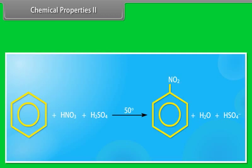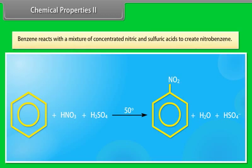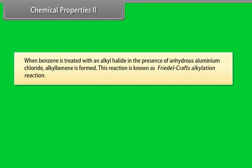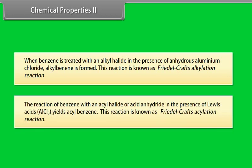In another example of an electrophilic aromatic substitution reaction, benzene reacts with a mixture of concentrated nitric and sulfuric acids to create nitrobenzene. The reaction of benzene with concentrated sulfuric acid at room temperature produces benzene sulfonic acid. When benzene is treated with an alkyl halide in the presence of anhydrous aluminum chloride, alkyl benzene is formed. This reaction is known as Friedel-Craft's alkylation reaction. The reaction of benzene with an acyl halide or acid anhydride in the presence of Lewis acid, AlCl3, yields acyl benzene. This reaction is known as Friedel-Craft's acylation reaction.